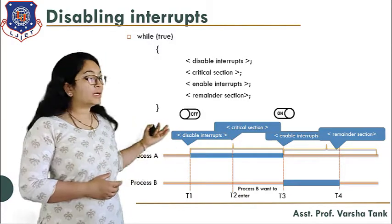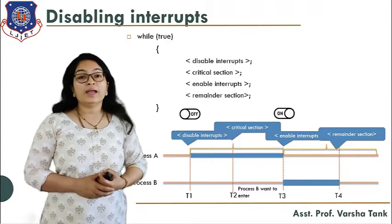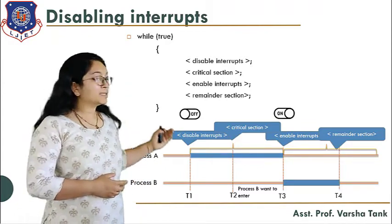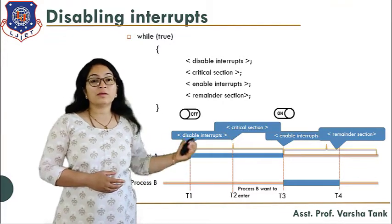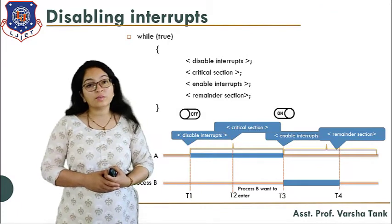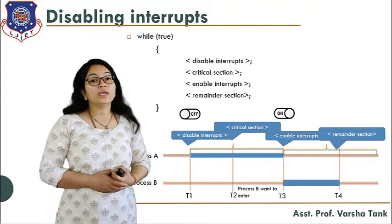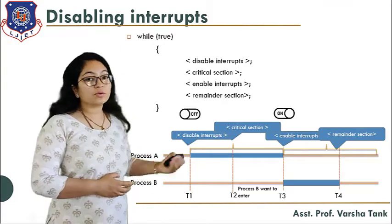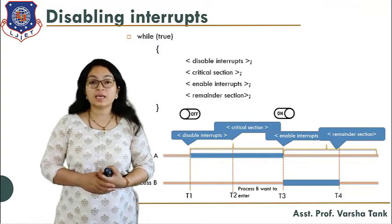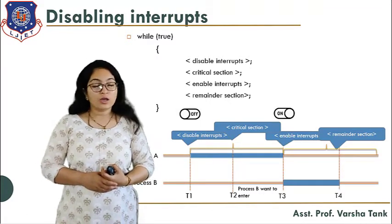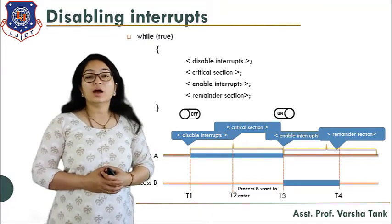At time T1, process A wants to enter the critical section, so it disables the interrupt and enters. At time T3 it completes its task and releases the critical section. After T3, the remainder sections allow other processes to access the critical section. At time T2, if process B wants to enter, it will not be allowed because process A is in the critical section.